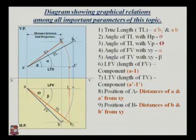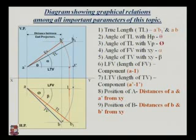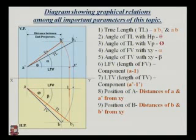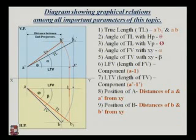The angle alpha is the angle of the front view which makes an angle with the XY line, and angle beta is the angle of the top view which makes an angle with the XY line. A1-dash is the length of the top view situated above the XY line, and A1 is the length of the front view situated below the XY line.